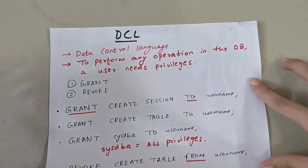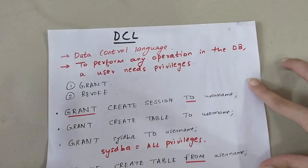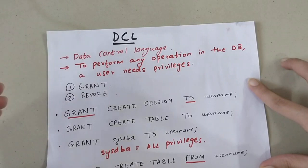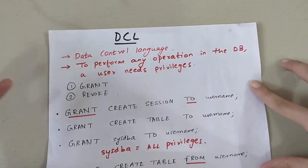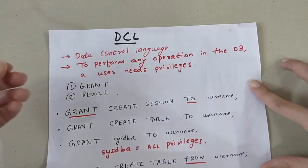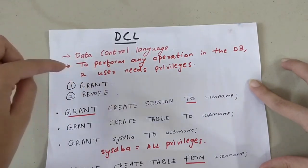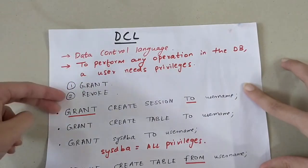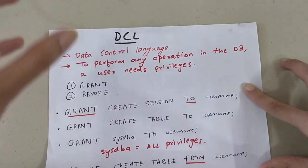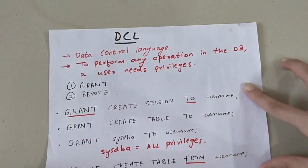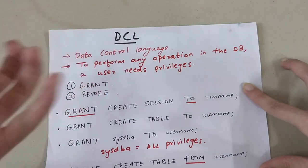DCL stands for Data Control Language. It is used to give privileges — basically permissions — to users in a database to perform operations. Without proper privileges, any user could drop any table even without the right to do so. DCL has two commands: GRANT, which gives a permission, and REVOKE, which takes that permission back.